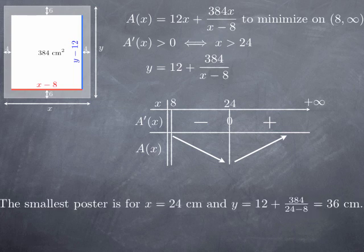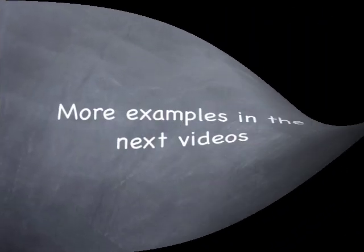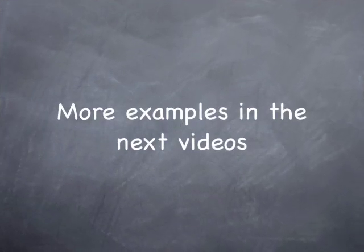That means that the smallest poster is for X equals 24 centimeters. And then the second dimension is obtained by just plugging X equals 24 in the expression giving me Y in terms of X. And that returns 36 centimeters. In other words, the best possible poster is 24 by 36. Now, we're going to see a few more examples in the next video.